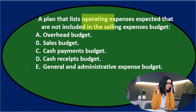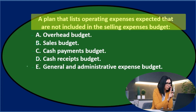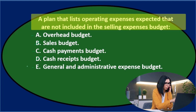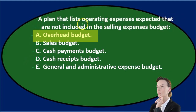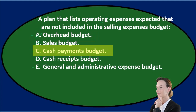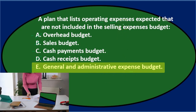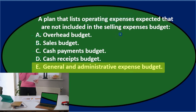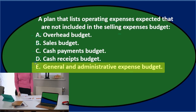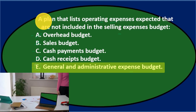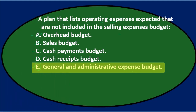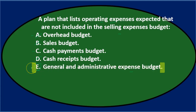A plan that lists operating expenses expected that are not included in the selling expenses budget. Is it the overhead budget? We're talking about operating expenses — overhead is typically cost of goods sold, so I don't think it's that one. C says cash payments budget versus E saying general and administrative expense budget. Of the two, E is an expense. On a multi-step income statement, operating expenses typically consist of selling and administrative expenses. They eliminated the selling expenses, which leaves us with the general and admin expenses. Final answer: E — general and administrative expense budget.